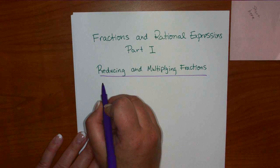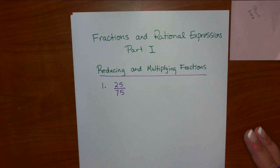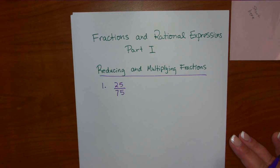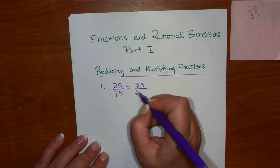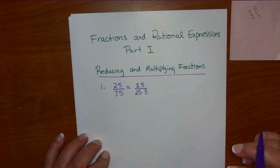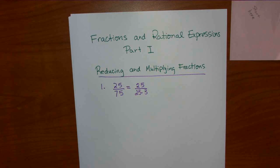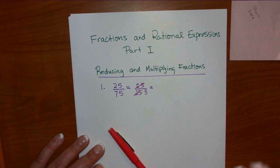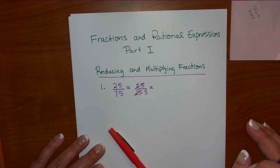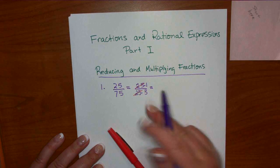We're going to start with reducing fractions. When you've got a fraction and you need to reduce it — we're starting with just numbers, fractions rather than rational expressions. You can write the factors. The word 'factor' means multiply. So 75 is 25 times 3. You can write the factors or think about them in your head. When a fraction is multiplied, there's no plus or minus sign — we do what's called canceling. So I canceled the whole top. What's left? Well, this is 25 times 1 over 25 times 3, so we're left with 1 third.